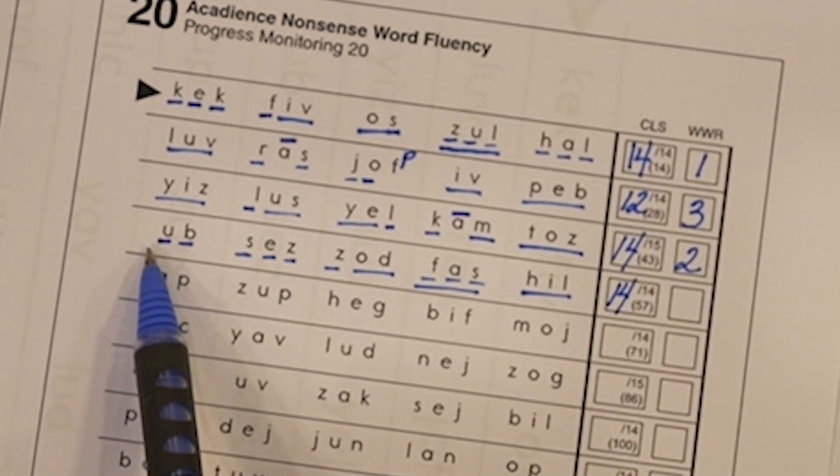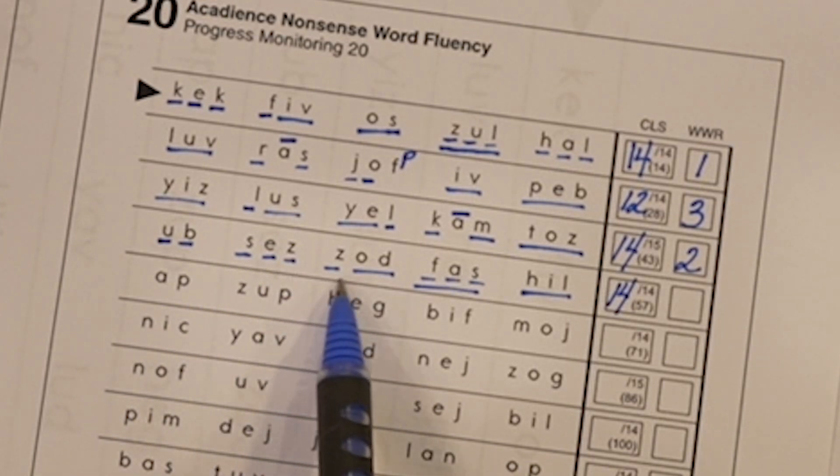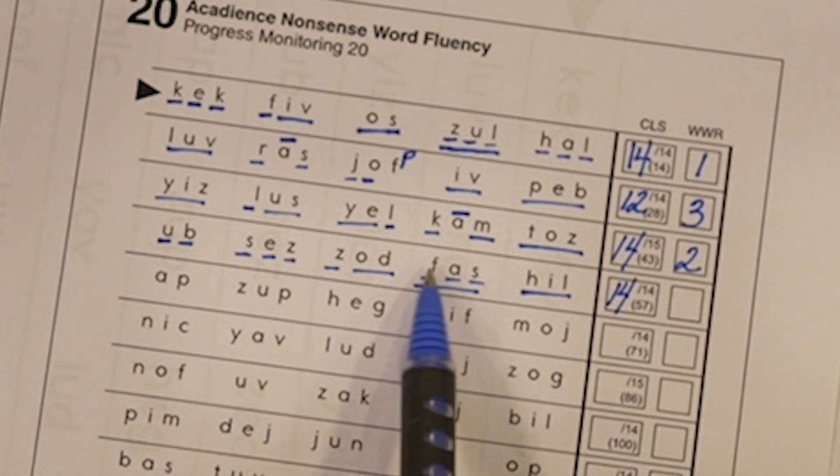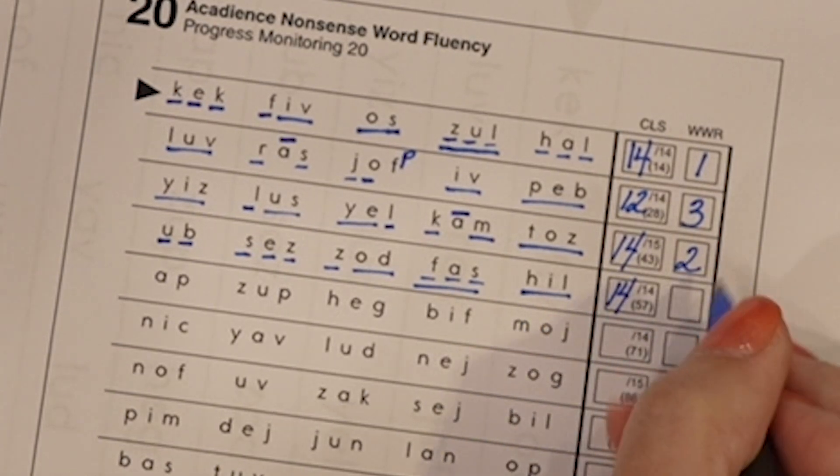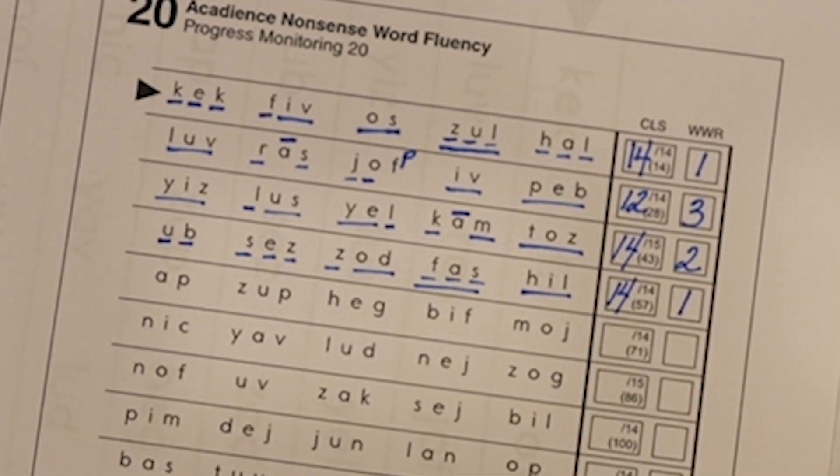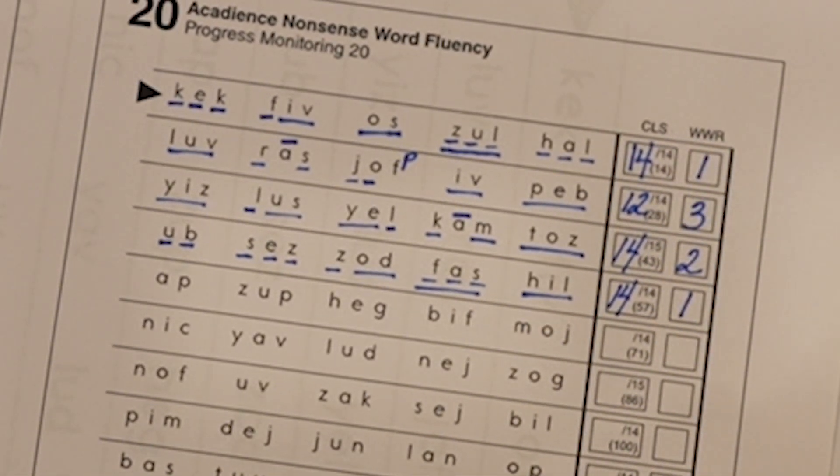And then do I have any that have the full line the first time? This is the second time. So that doesn't count. Here's the first time. I'll give a point there. And then you're going to total these up.